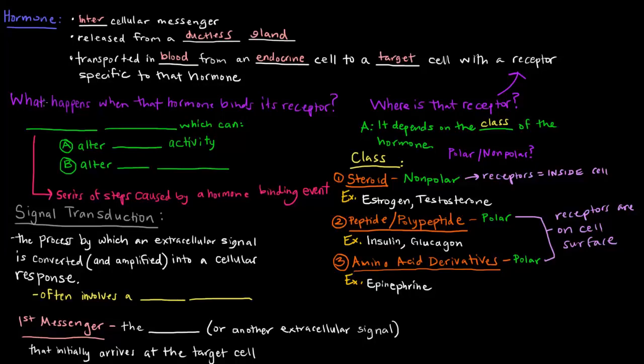So what actually happens when that hormone binds its receptor? This thing called a signaling cascade occurs, which is basically just a series of steps caused by a hormone binding event. A hormone binds the receptor, and it causes a series of steps to occur.